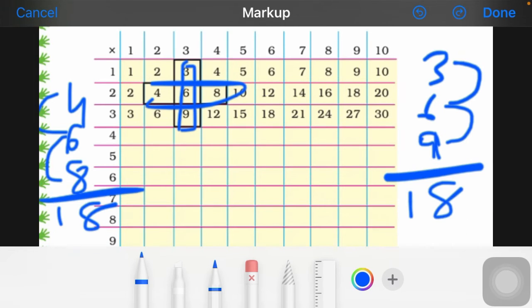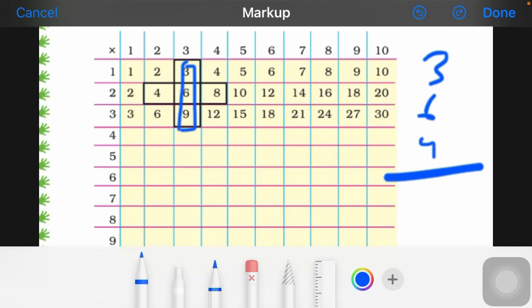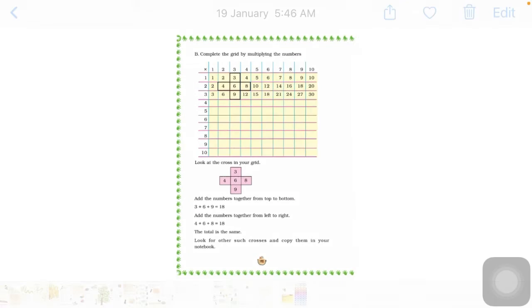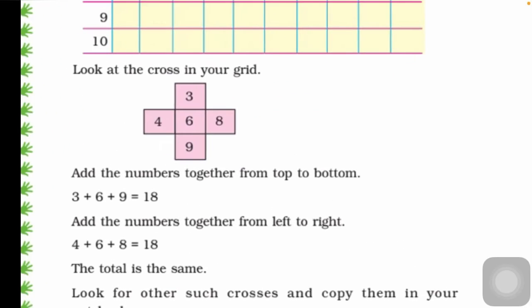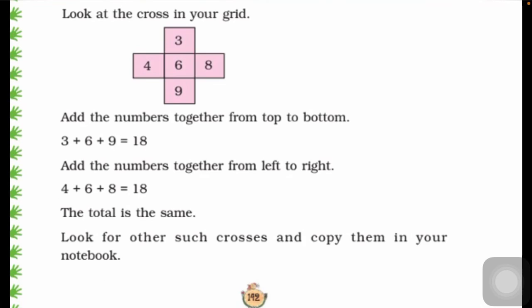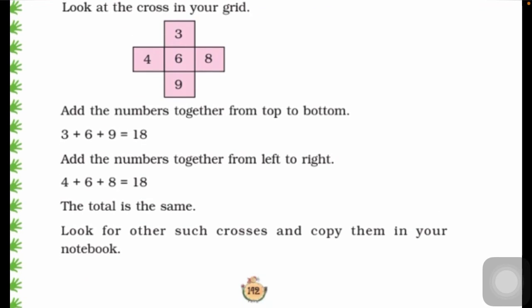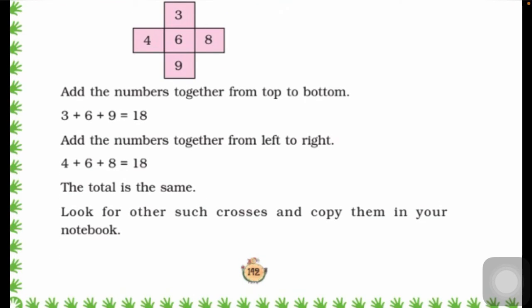Now we go to any number, select your answer same here. Look at the cross in your grid. Add the numbers together from top to bottom. Top to bottom three, six, nine, and answer eighteen. And add the numbers together from left to right. Four, six, eight, and answer eighteen.